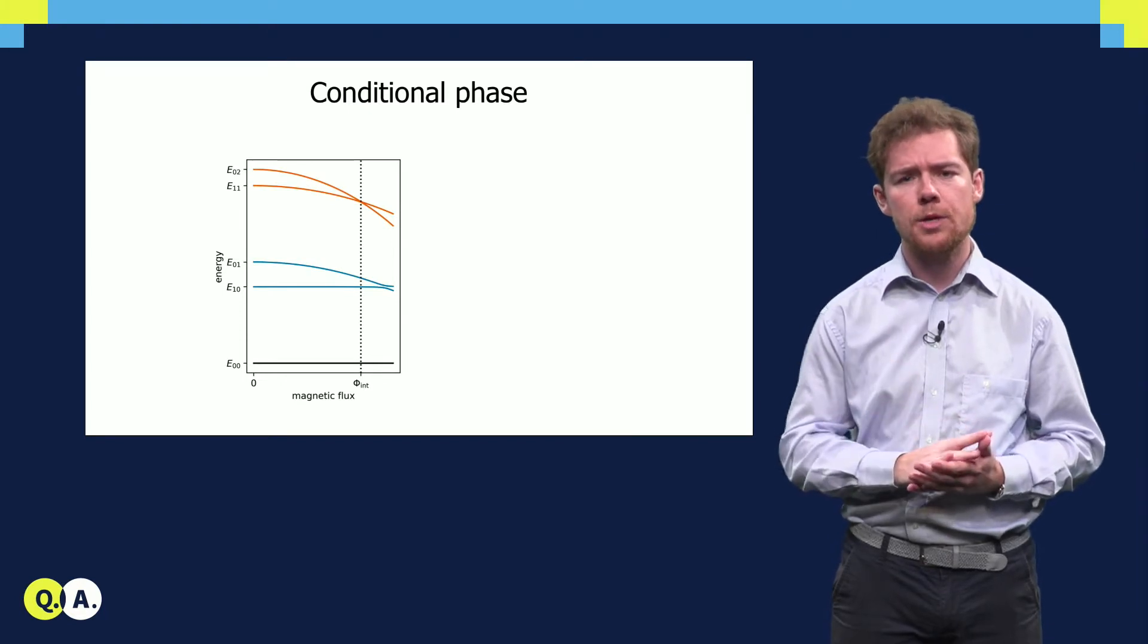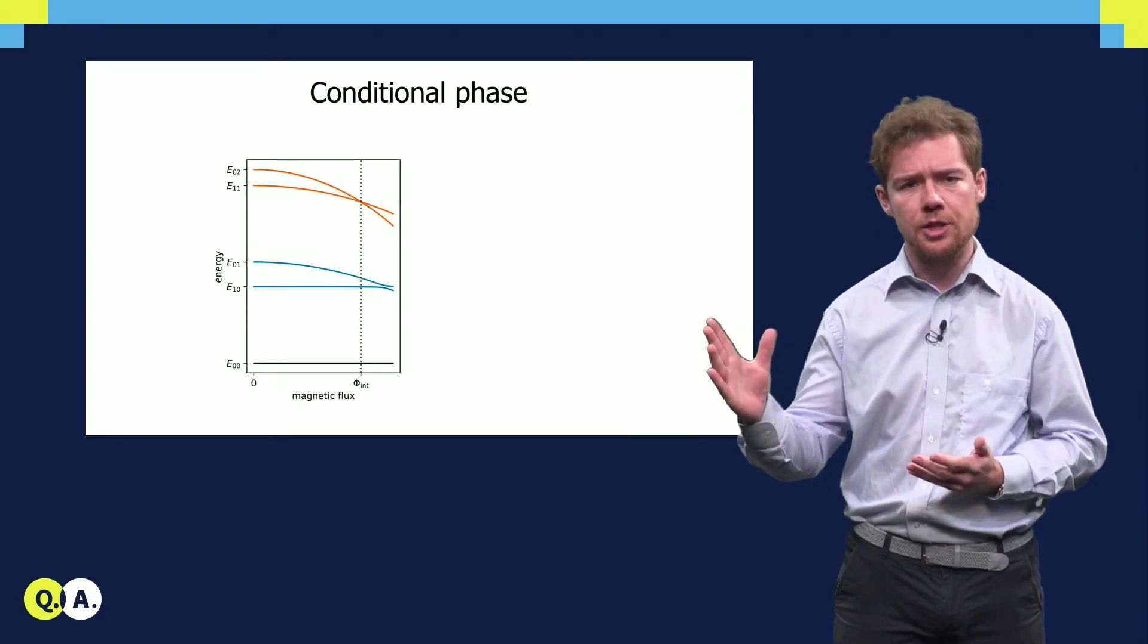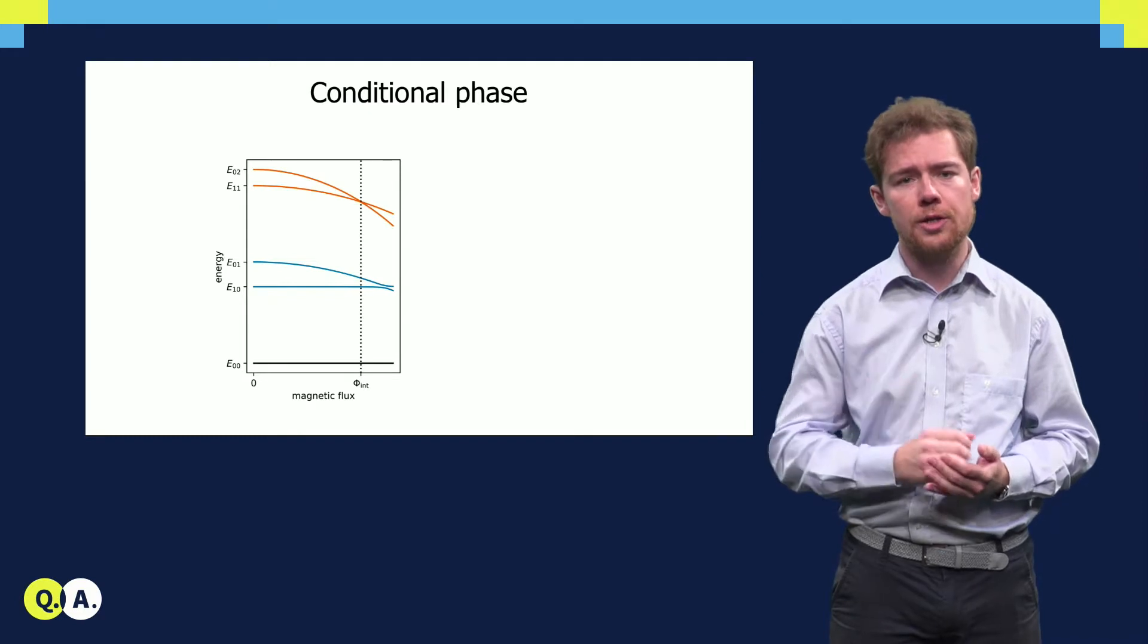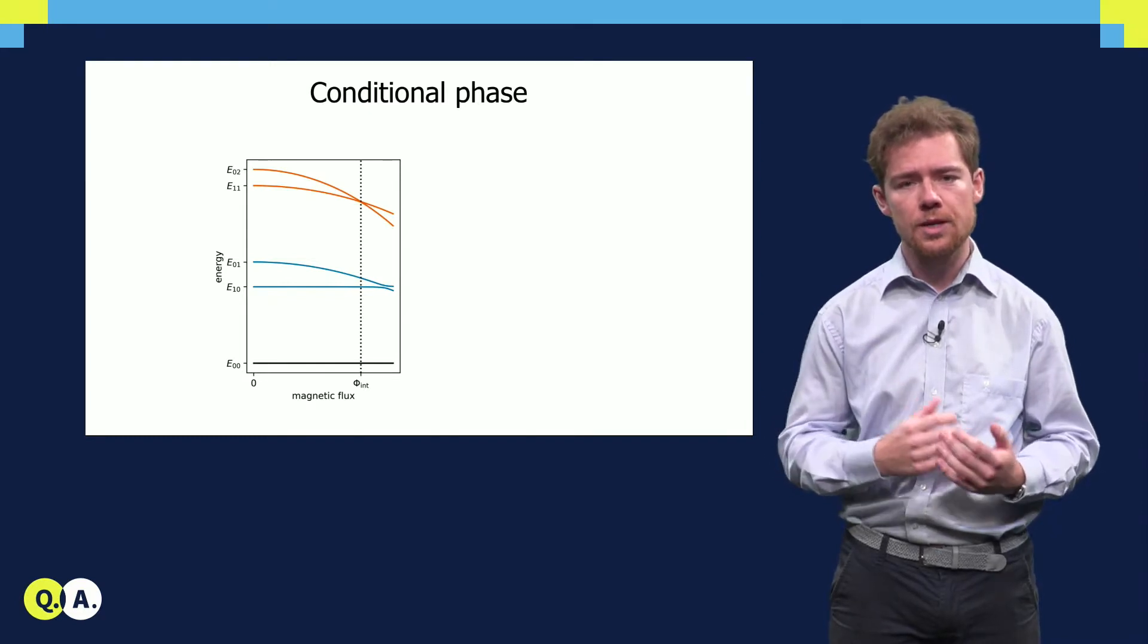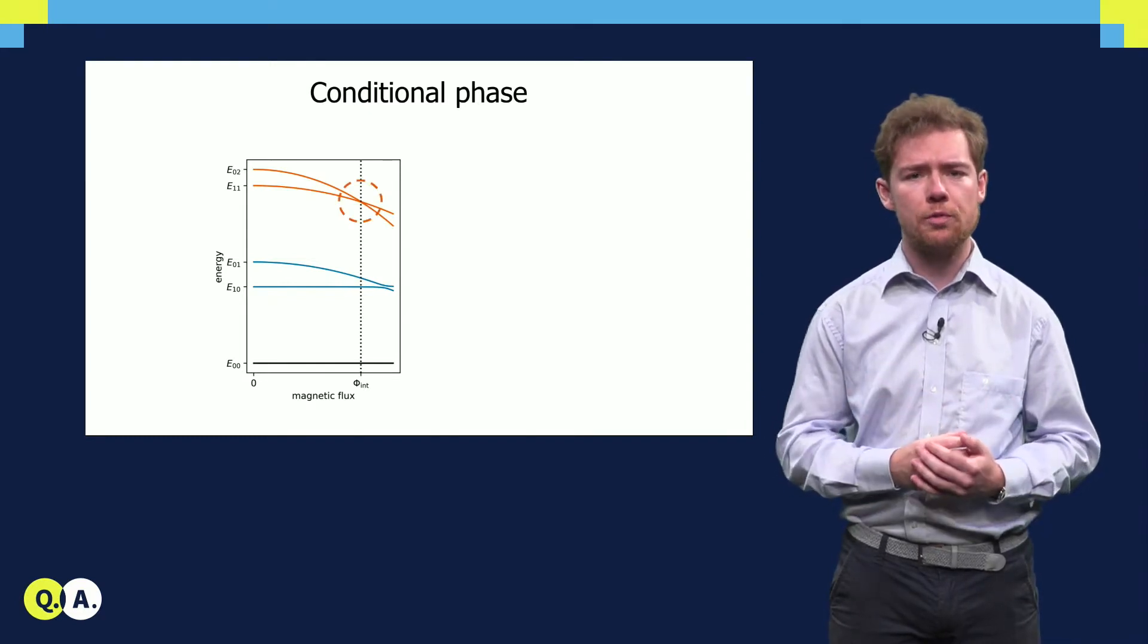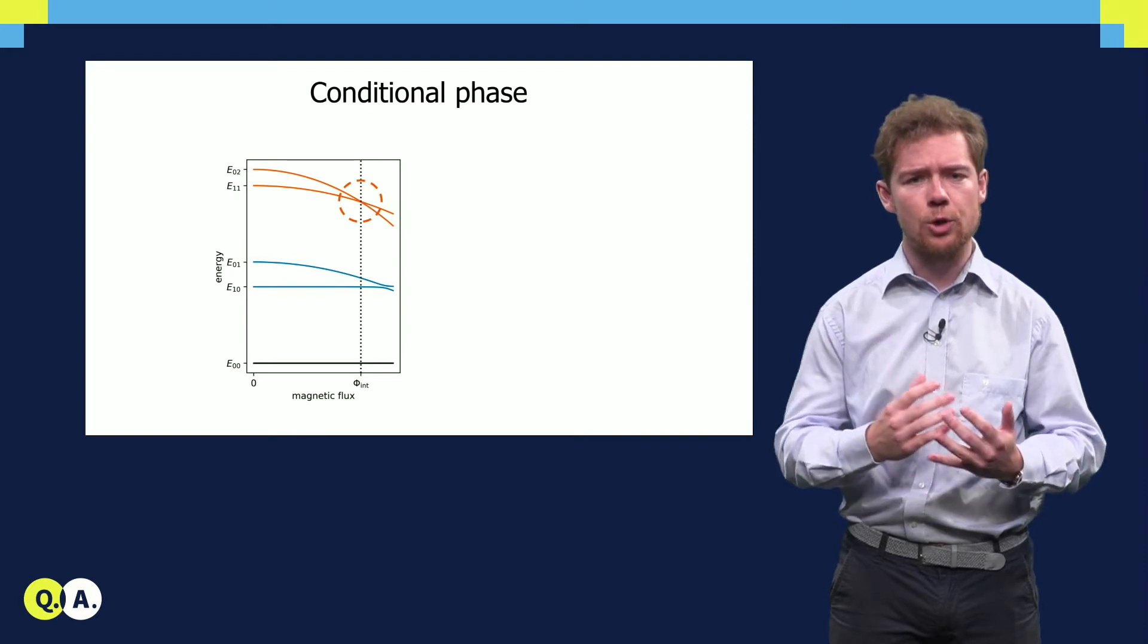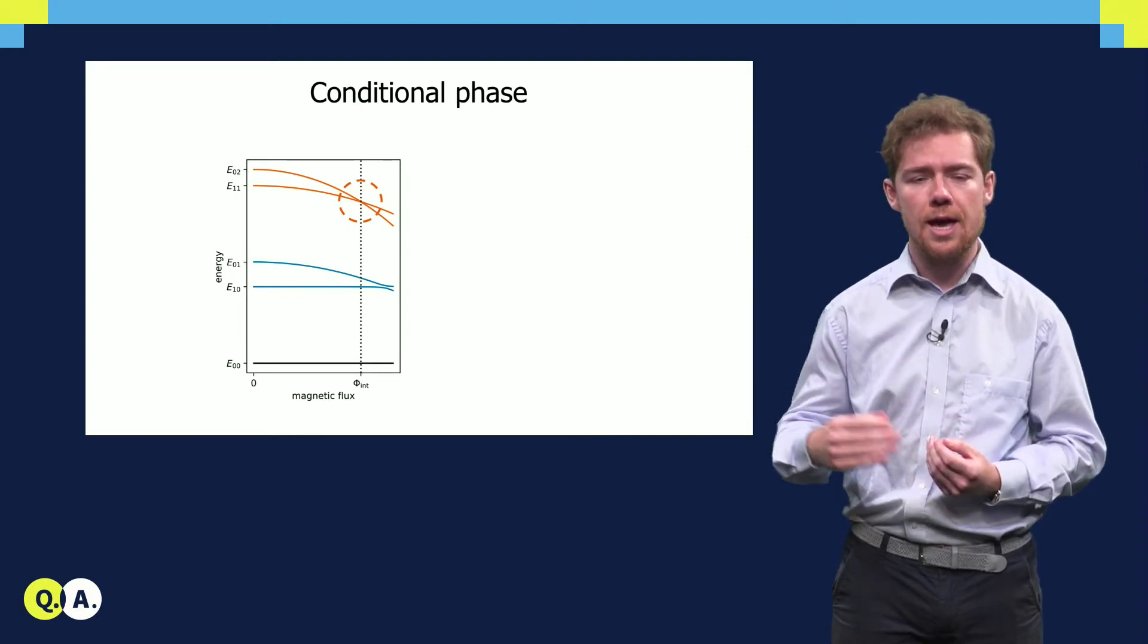In this level diagram, the subscripts denote the number of excitations in the control and target qubit respectively. The interaction that is used to perform a C-phase gate is an avoided crossing between the 1-1 and 0-2 state.